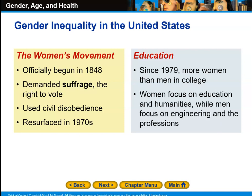Education: since 1979, more women than men have been going to college. Women focus on education and humanities — fields like social studies, English, philosophy, and things like that — while men focus on engineering and the professions, going into areas like medicine, architecture, and engineering-type positions.